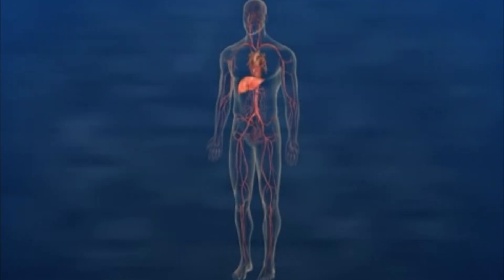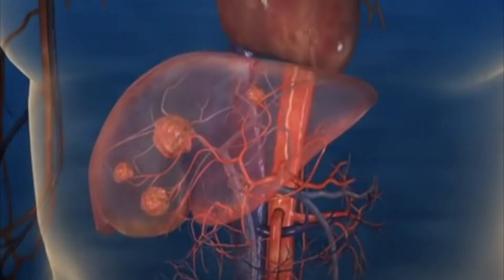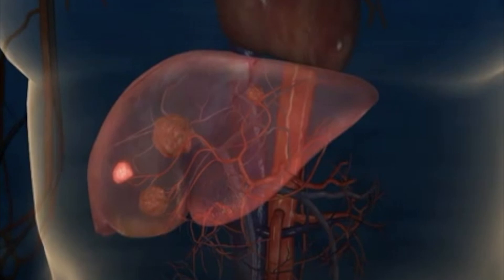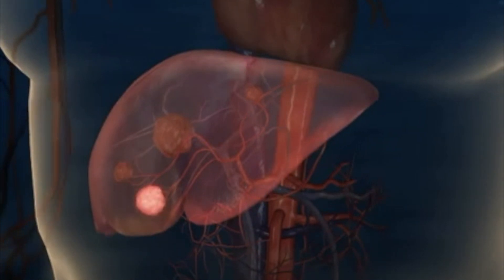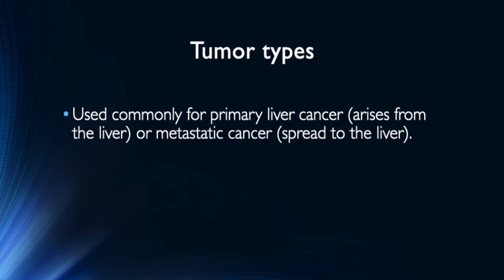TARE is a term to describe a procedure which involves delivering microscopic radioactive particles directly to the arteries feeding a liver tumor. If you have ever seen the video on chemoembolization, it is very similar, but there are a few key differences we will cover. TARE can be used for primary liver cancer called hepatocellular carcinoma, or other cancers that spread to the liver such as colorectal cancer.